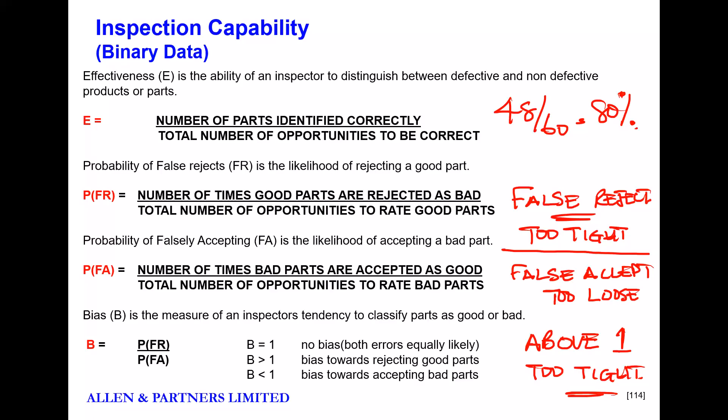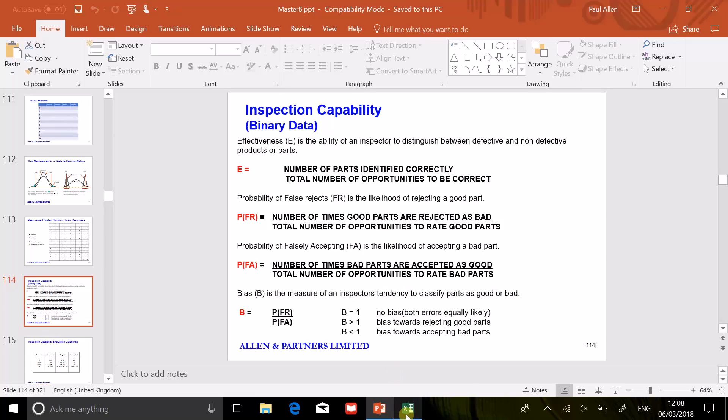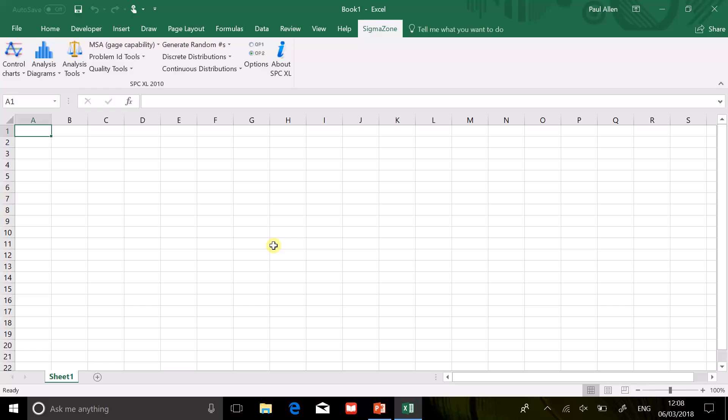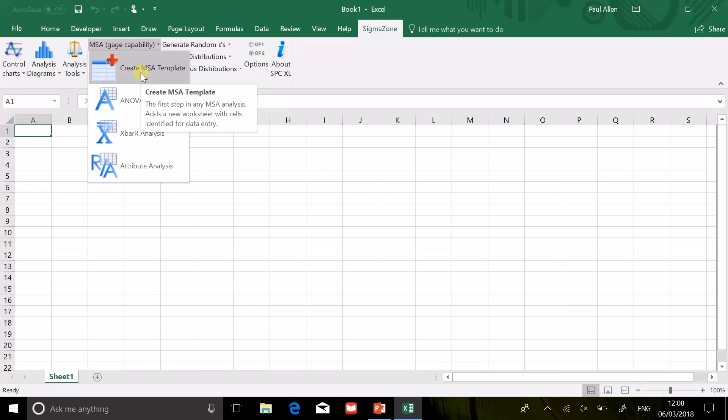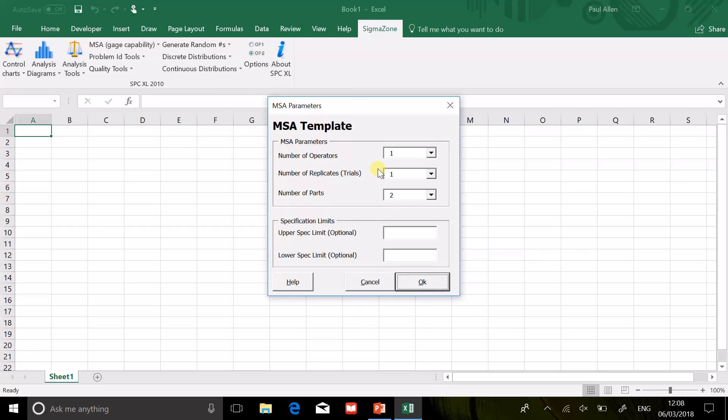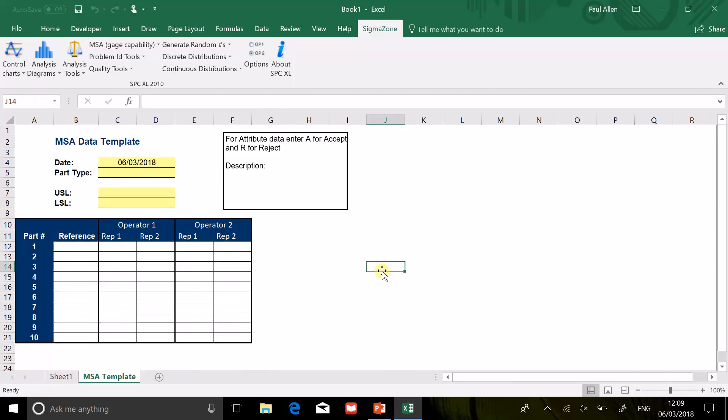The software is going to do this for you. Let me show you. I've got Sigma Zone waiting for me here. You would go gauge capability, you're going to create a template. It says how many operators do you have - let's just say we have two operators. How many trials are they going to do - let's say they're going to repeat the test twice. Let's say we're going to give them 10 parts. We click OK. So you get this empty table.